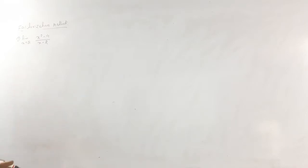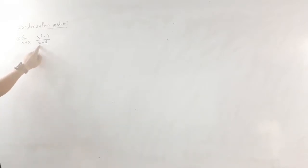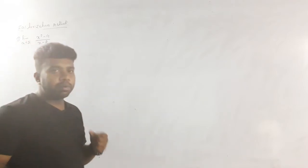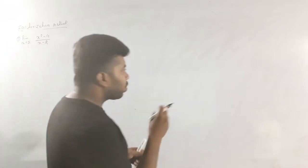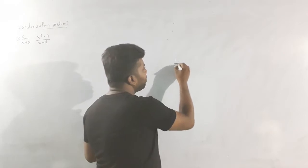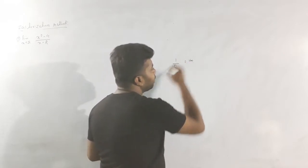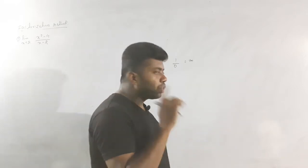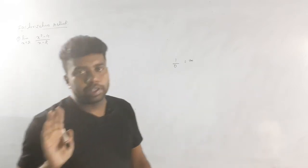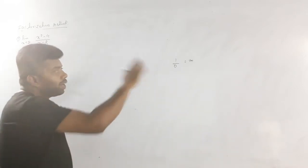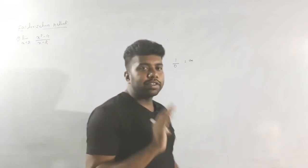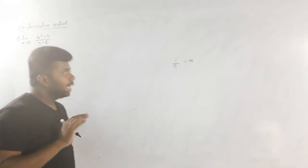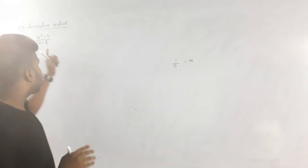If you directly substitute the value, what do you get? You will say the answer is 0. If the numerator is 0 and denominator is also 0, you are writing 0 by 0, which means the answer is in an indeterminate form. Similarly, something divided by 0 gives infinity. So when you get 0 by 0, the answer is indeterminate — you cannot pass the limit by direct substitution.